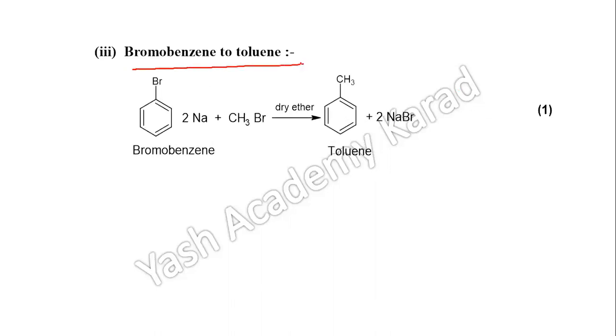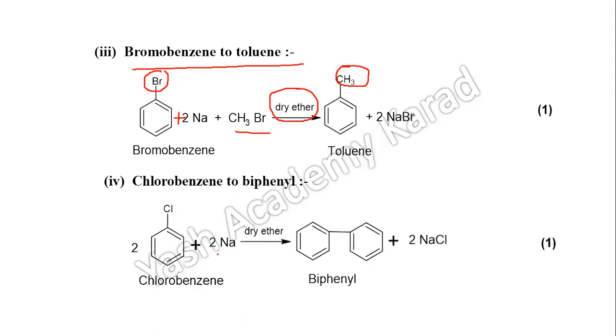Bromobenzene to toluene: bromobenzene plus twice of sodium plus methyl bromide. This condition is very important. Chlorobenzene to biphenyl. This condition is very important. There is formation of biphenyl, one mark. Thank you.